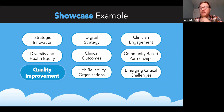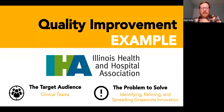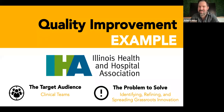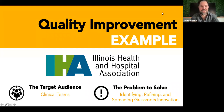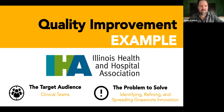We're going to go through four examples, highly informed by our own experiences and projects. This first one is a classic quality improvement example that Matt and I put months and months of work into. We worked with a State Hospital Association to identify, refine, and scale quality improvement initiatives and best practices — taking those hospitals that are bright green on their dashboards for things like falls, sepsis, C. diff, and readmissions, and figuring out how to bottle and disseminate that work.